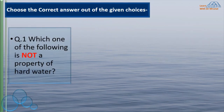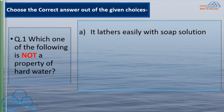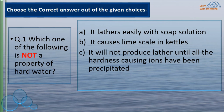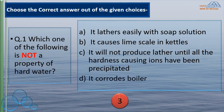Which one of the following is not a property of hard water? It lathers easily with soap solution. It causes lime scale in kettles. It will not produce lather until all the hardness causing ions have been precipitated. It corrodes boiler.